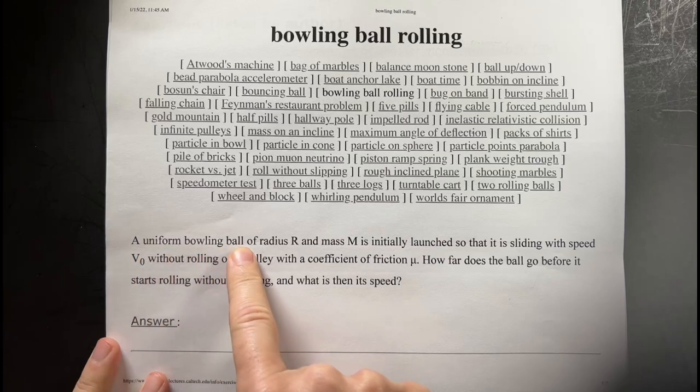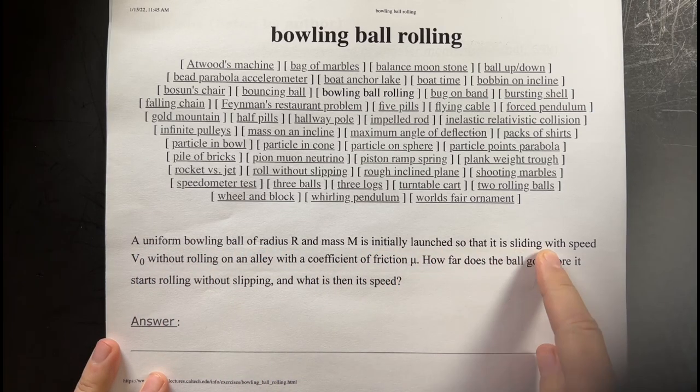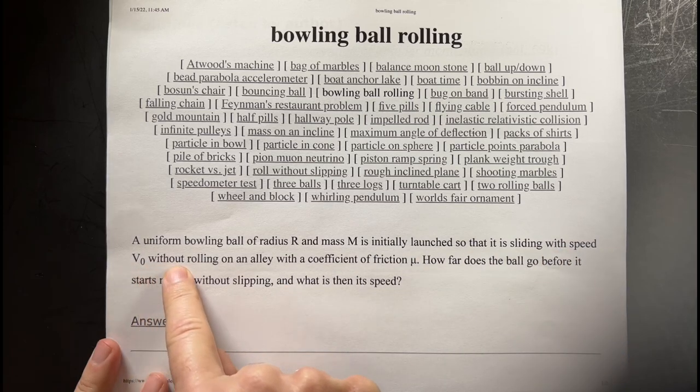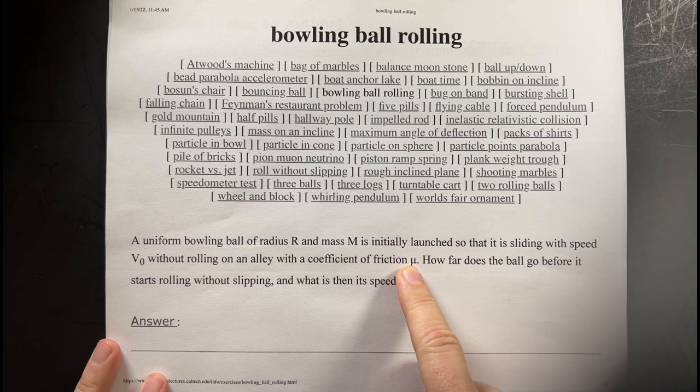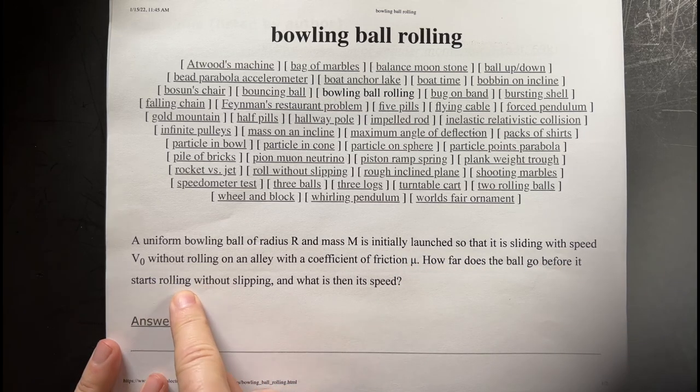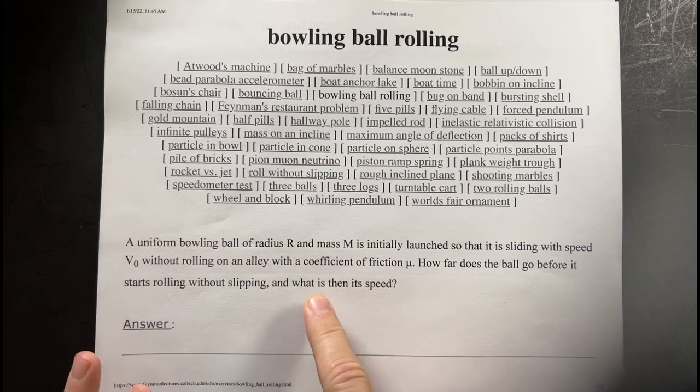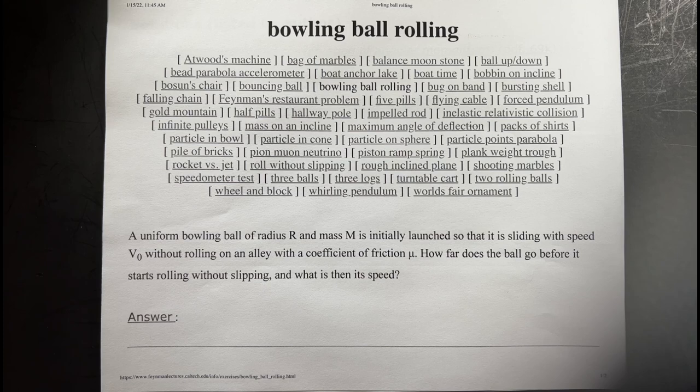A uniform bowling ball of radius R and mass M is initially launched so that it is sliding with speed V0 without rolling, with coefficient of friction mu. How far does the ball go before it starts rolling without slipping, and then what is its speed? I mean, obviously there's friction, and there's going to be rolling.